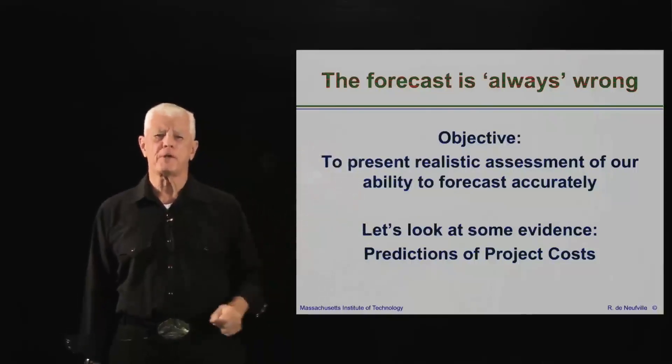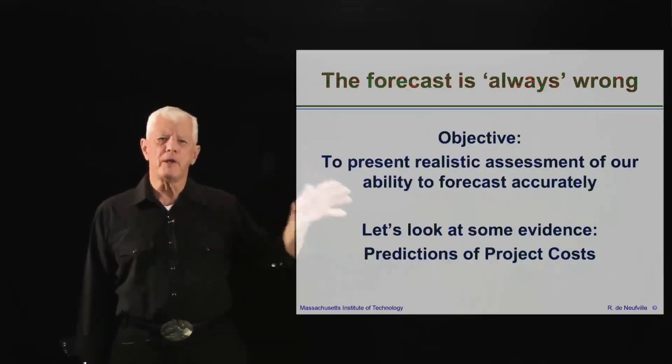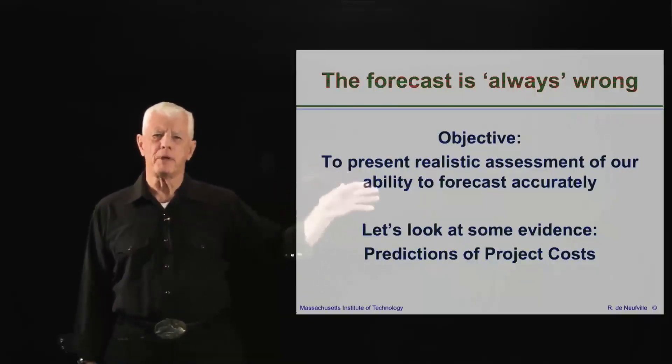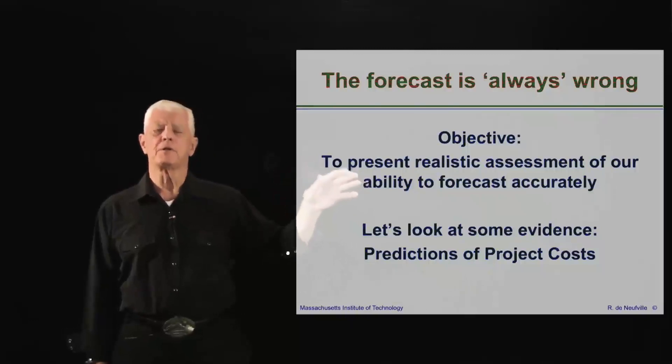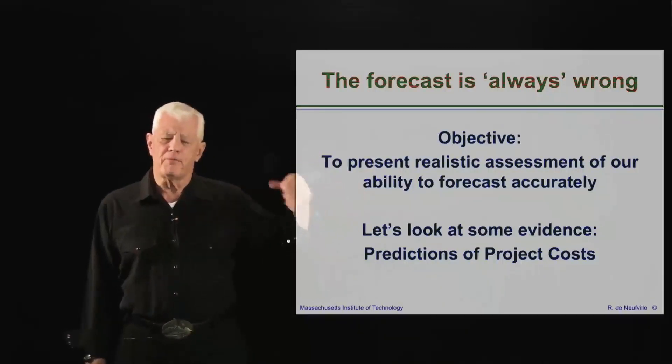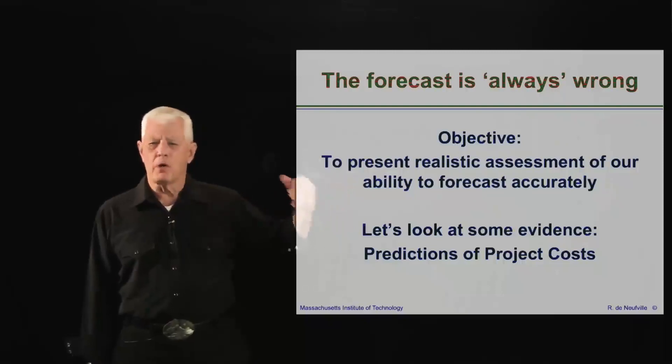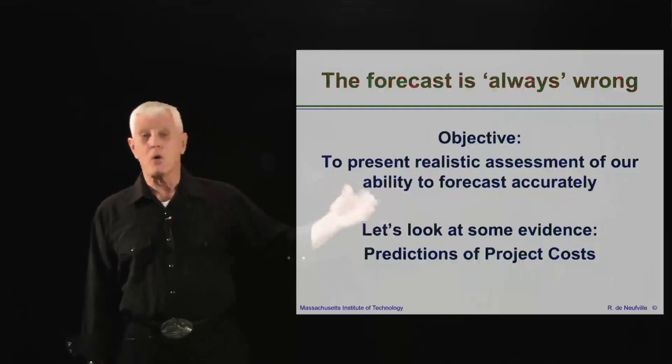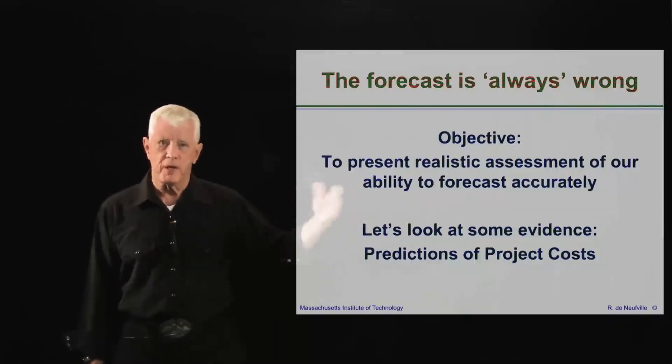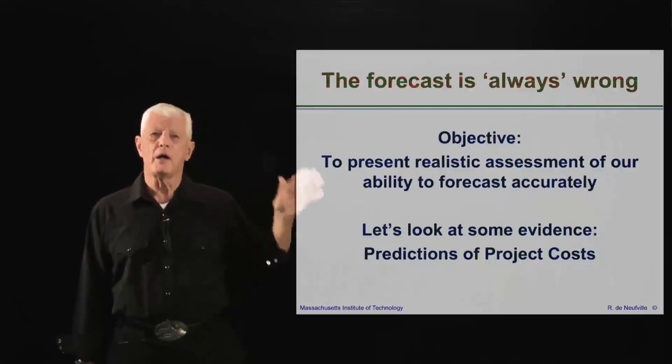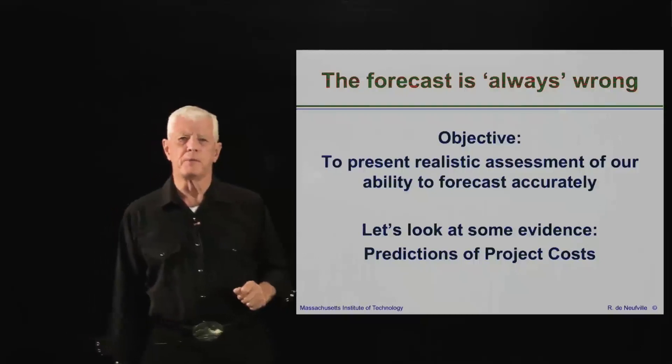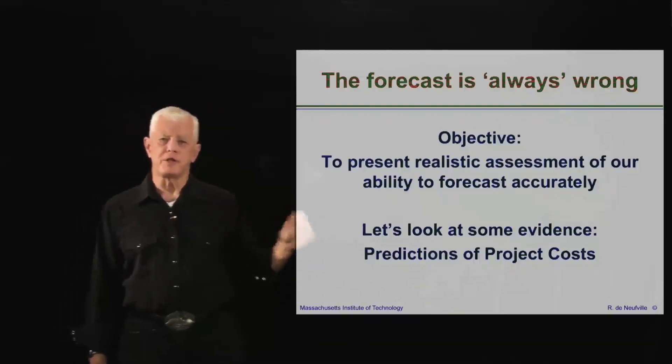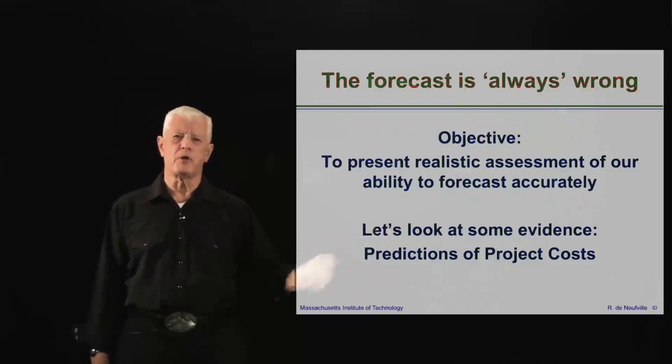So the objective of this exercise is to give us a realistic assessment of our ability to forecast accurately. You will come away with the evidence that, in general, the forecast that we make for the performance of a system 5, 10, 15 years in the future, or even a year or six months if it's a fast turnaround kind of technology, are different from what we anticipated. Let's look at some evidence. And first of all, the simplest possible case, projection of project costs.